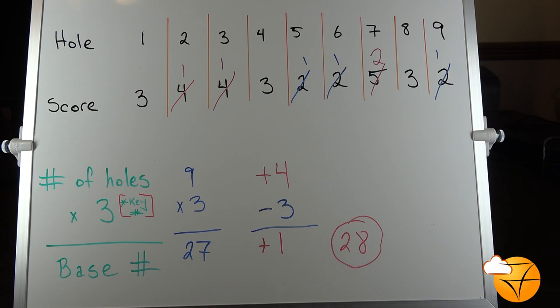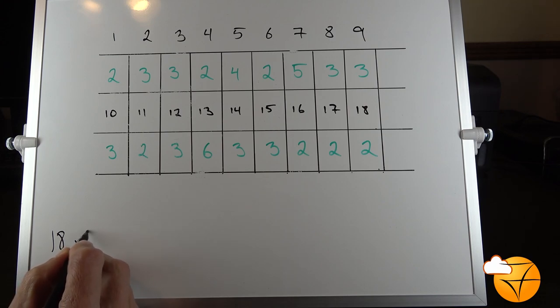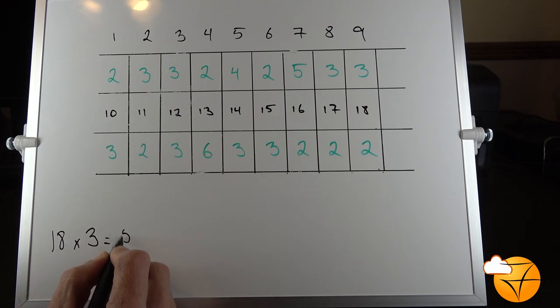Now let me give you an example on a full scorecard. All right, so here is a sample scorecard. Let me show you how I add it up really quickly. First thing I do: how many holes did I play? I played 18. 18 times the key number three—that gives me 54.